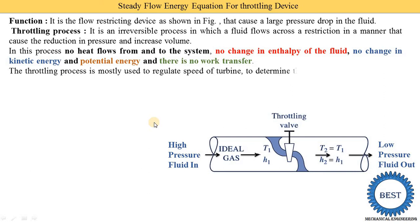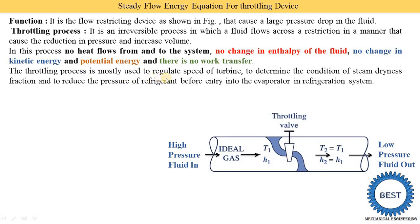The throttling process is mostly used to regulate the speed of turbines — it is used in gas power plants and steam power plants. A second application is to determine the condition of the steam dryness fraction. A third application is to reduce the pressure of refrigerant before entry into the evaporator in a refrigeration system, meaning it is used in freezers and AC units.